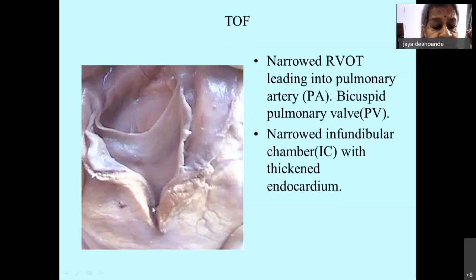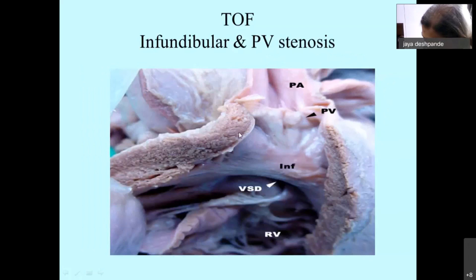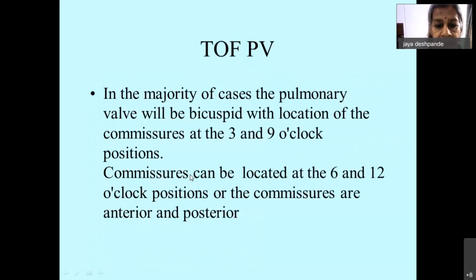The infundibulum is a small chamber — here is the os infundibulum — and somewhere it leads to the pulmonary valve. Very often there is pulmonary valve stenosis; the pulmonary valve is generally bicuspid. Here again you see a dysplastic bicuspid pulmonary valve, the infundibular chamber which is small with thickened endocardium. The pulmonary valve seen from the top shows a bicuspid valve with stenosis and only a slit-like opening. In the majority of cases the pulmonary valve is bicuspid with commissures at the 3 and 9 o'clock positions, though commissures at 6 and 12 o'clock can also occur.